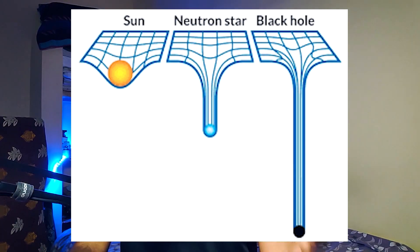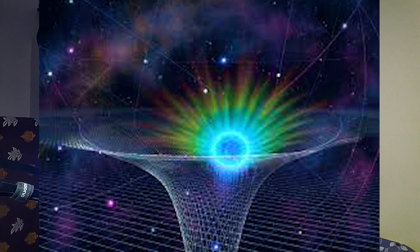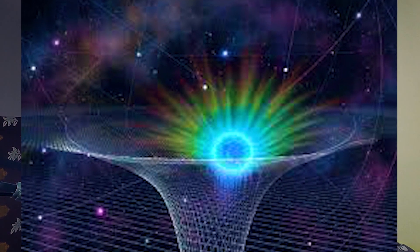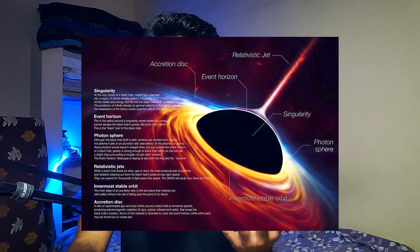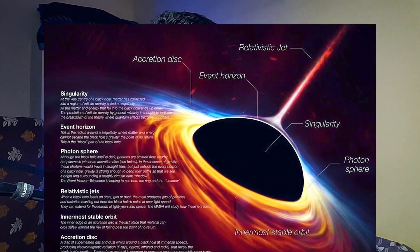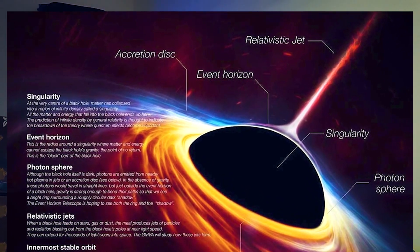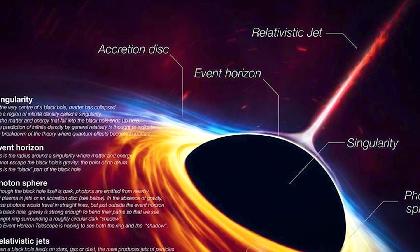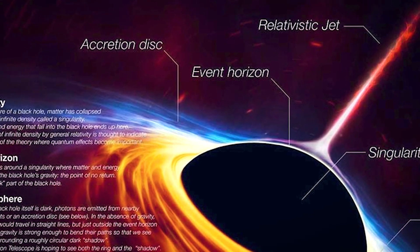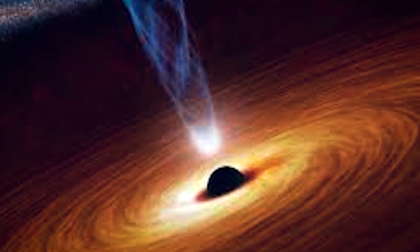Black holes form from supernova explosions. Their mass is so enormous that they pull space fabric down so far that a hole is formed. Because of this immense depth in the space fabric, their gravitational influence is so strong that once you cross the event horizon — commonly known as the boundary of a black hole — you can never come back out. And it's not just you; no body, not even a star, and not even light, can escape from its influence.